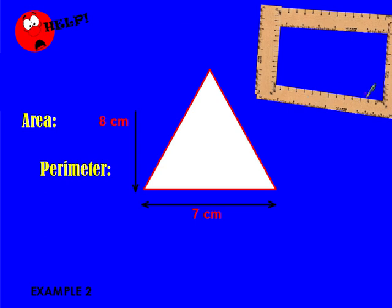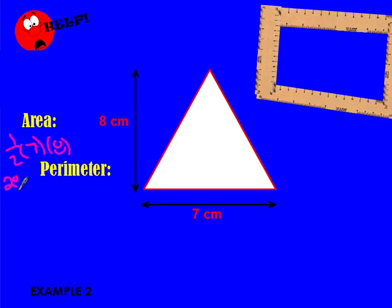Try this one — come back when you're ready. So half times 7 times 8. Half of 8 is 4, and 4 times 7 is 28, so 28 centimeters squared. And the perimeter — this is an equilateral triangle, so all sides are the same. 7 plus 7 plus 7 is 21 centimeters.